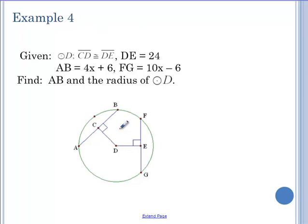Now these two chords are congruent again. Same type of picture. Same congruent distance. Same congruent chords. These are split in half. These are split in half as well. We know that DE is 24. We know AB is 4x plus 6. We know FG is 10x minus 6. I need to find AB. I need to find x to do that. And then I want to find the radius.